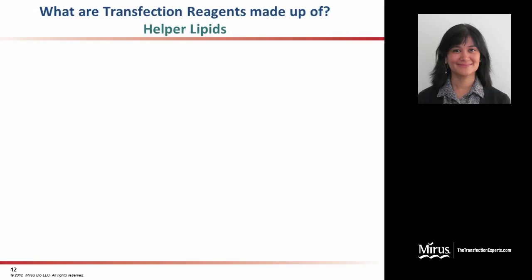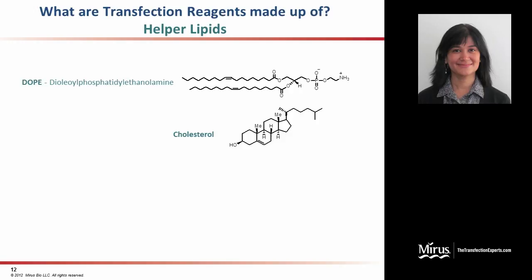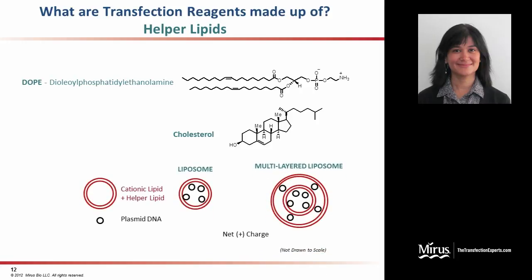In addition to cationic lipids, a few transfection reagents also contain another class of lipids called helper lipids. A few classic examples of helper lipids are DOPE and cholesterol. The helper lipids, in conjunction with cationic lipids, form structures called liposomes that are effectively able to encapsulate DNA.